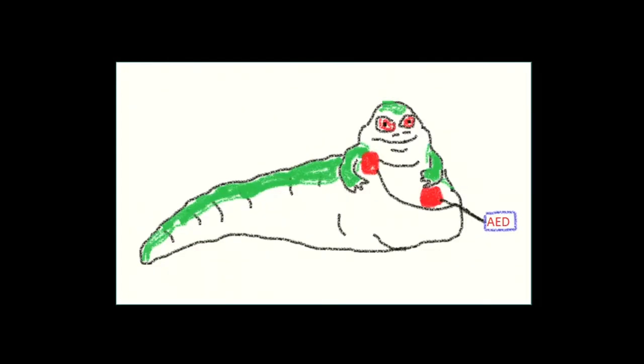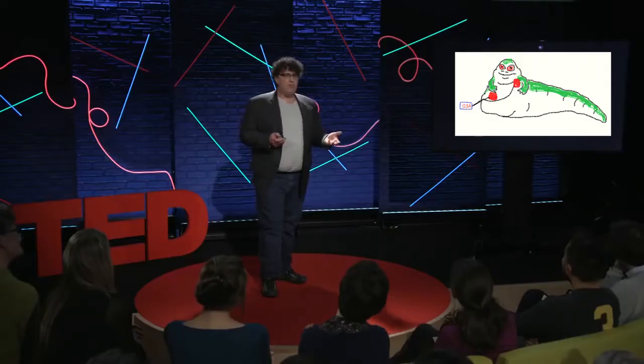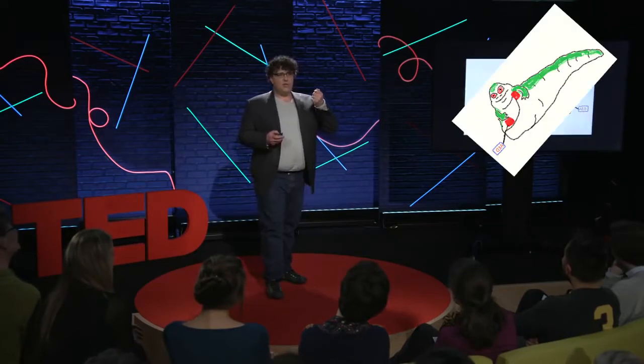If we do have to use an AED on him, remember pad placement, so it's going to be upper right-hand side, lower left. The preferred method, if we're going through, we're shocking, getting ready to go, after we've done the shock, one of the things we need to do is remember to do compression.